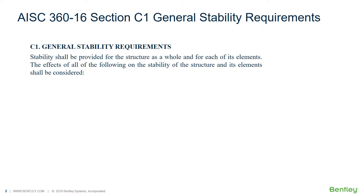Beginning in 2005, the AISC 360 specification for design of steel buildings explicitly listed a requirement that the effects of stability-related conditions be considered. Prior to that specification, these were considered not necessarily explicitly, but often through the use of design equations that had limits on capacities that were conservative. AISC 360 now requires that they be explicitly addressed. There is often a great deal of uncertainty about this requirement, and it is easy to neglect including important effects that should be considered in obtaining proper designs.